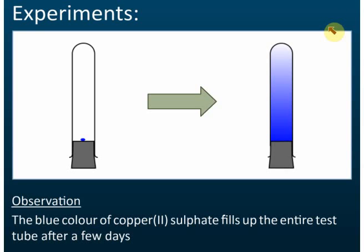The first experiment is diffusion in solids. We have some gel inside a test tube, and then we put in a piece of copper sulfate. Copper sulfate is blue in color, and you need to know the colors of copper sulfate. Make sure you remember because in an exam they will ask you what color copper sulfate is.